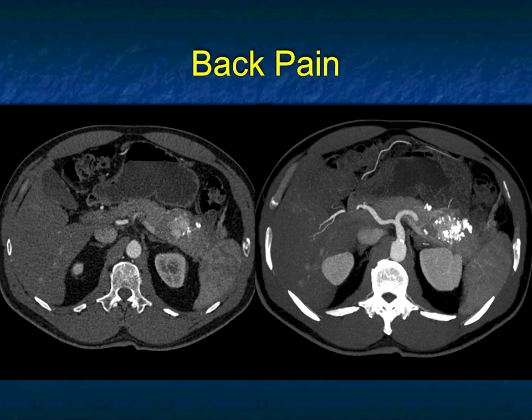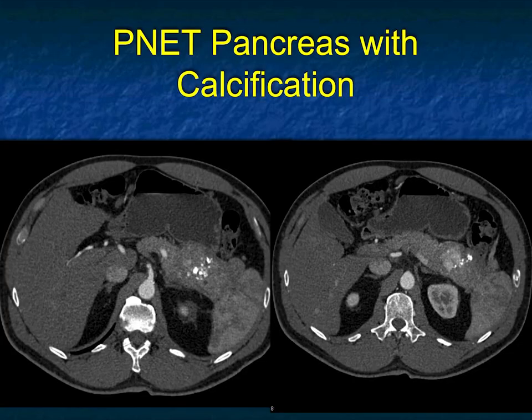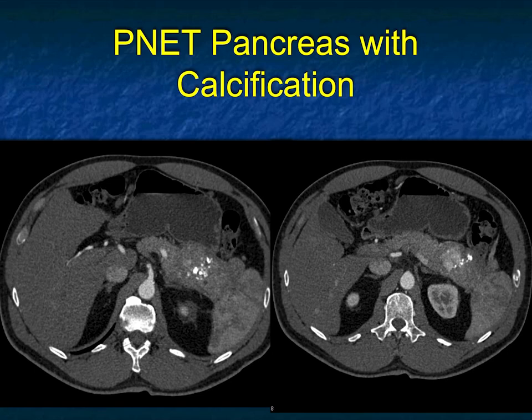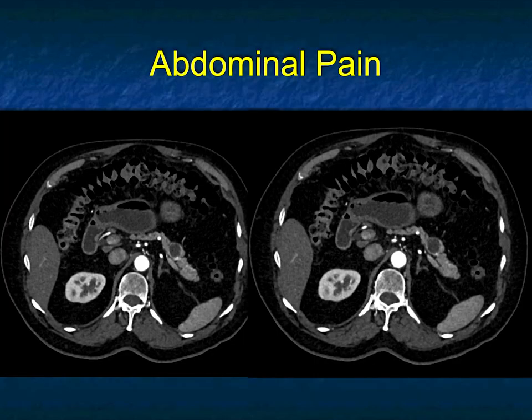It's not going to be a mucinous tumor. Yes, serous cystadenomas and MCNs can have calcifications, but those are punctate calcifications — not dense, coarse calcifications that are fairly extensive in a vascular lesion. This is the classic appearance of a neuroendocrine tumor of the pancreas: classic calcifications, classic vascularity. A very important diagnosis to make.